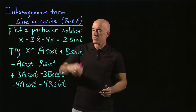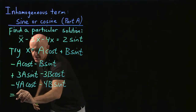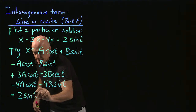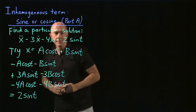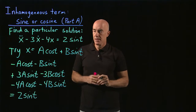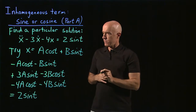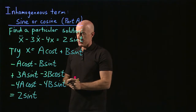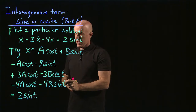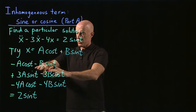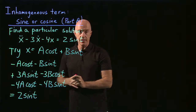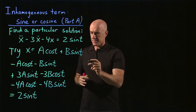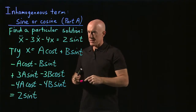And that's supposed to be equal to 2 sine t. The next step of the algebra is to collect all the terms multiplying cosine and all the terms multiplying sine.